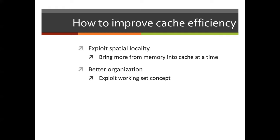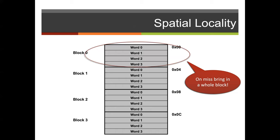One way we can improve cache efficiency is called cache blocking, which exploits spatial locality. When we have data that needs to be retrieved from the cache, instead of just bringing in one word of data, we want to bring in blocks. In this case, we've identified four words that will be brought in, so one block will contain four words of data — four bytes each. For any address we pull, we're going to pull the corresponding three successive blocks of data.